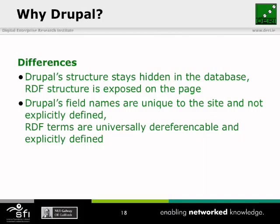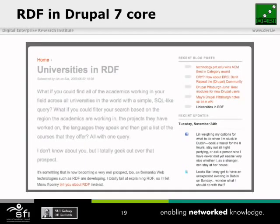In Drupal, the field names are unique to the site and not explicitly defined. When I'm creating my name field, I can come up with whatever name I want — it could be 'name,' 'identifier,' or any kind of machine-readable term. Anybody coming to my site doesn't know exactly what I meant when I created that field. While in RDF, you use terms from a vocabulary that's published on the web — either published by somebody else or yourself. By publishing it on the web, you make it universally dereferenceable so people can look up what the term means, use it responsibly, and make your systems interoperable.